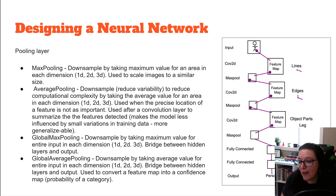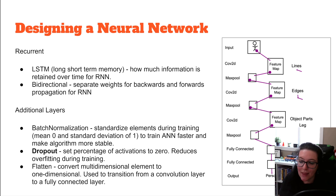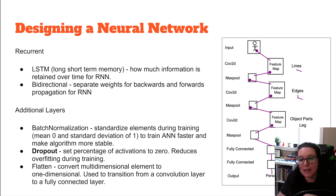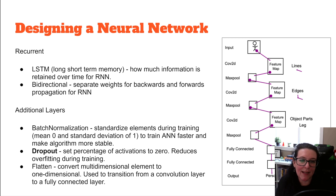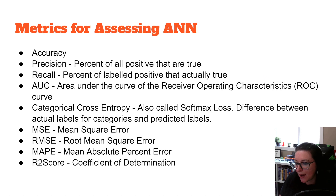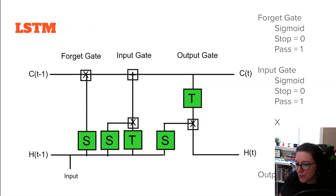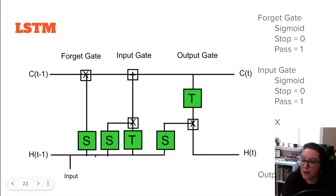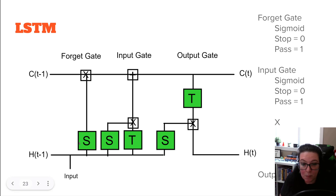We're going to look at a special case of a recurrent neural network called long short-term memory, or LSTM. It's built into Keras and TensorFlow so we can call it directly. The benefit is that it provides multiple layers all pre-built for us. Here we have our input and hidden layer, and the first thing that happens is a sigmoidal activation function to help decide what information to keep and what to forget — this is called the forget gate.